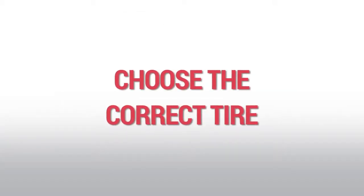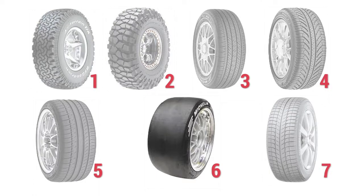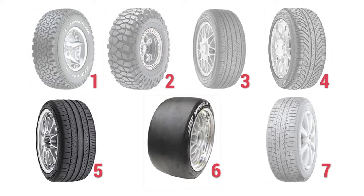Once we understand the vehicle and the consumer, we can choose the correct tire. Let's do an exercise: which tire is going to give the best performance and the quietest ride? If you chose number six, you're correct — that tire is in constant contact with the road and will be extremely quiet while giving very good traction. Tire number five will similarly be very quiet due to its constant center rib and large block segments. Tire number three will also give very good traction and will likely deliver extremely good tread life.